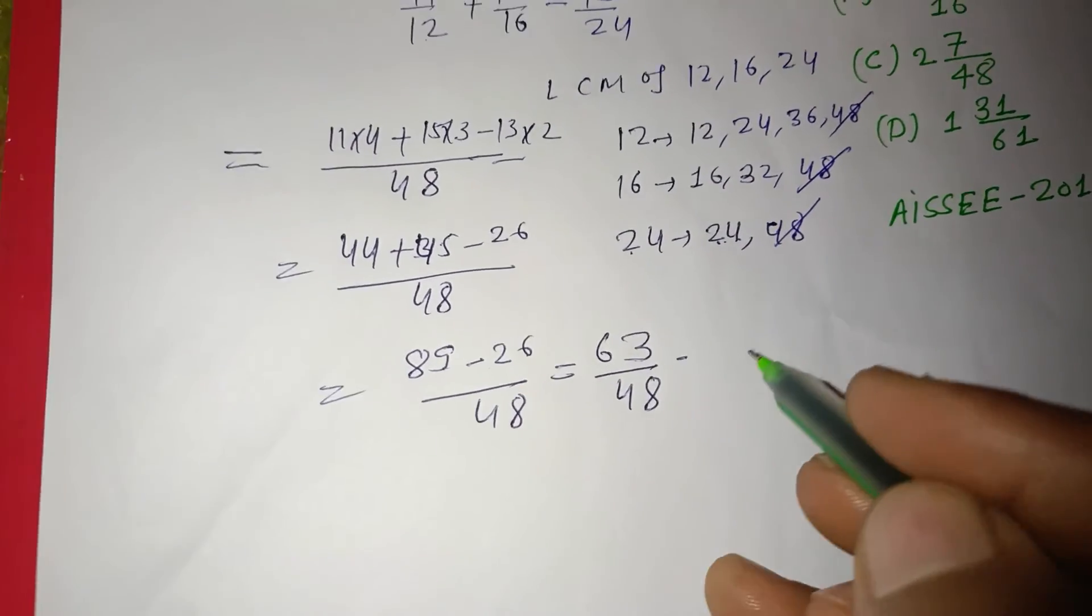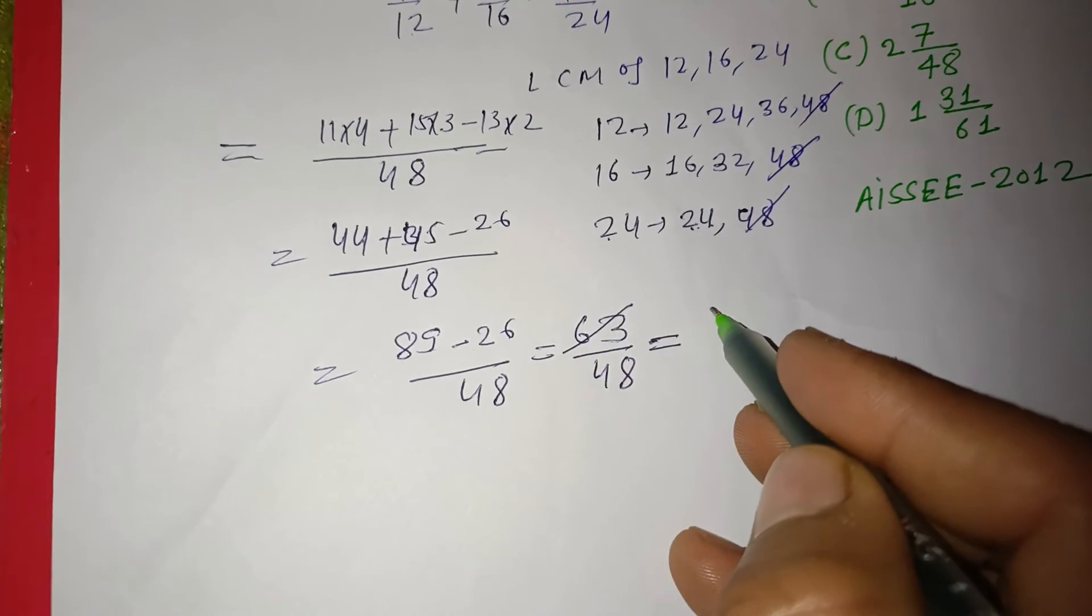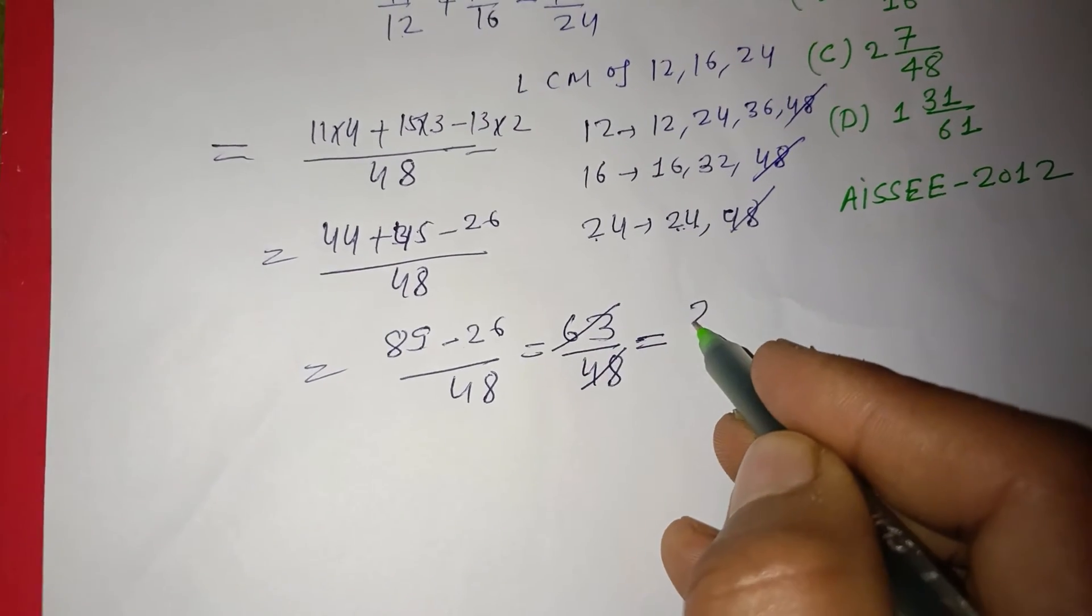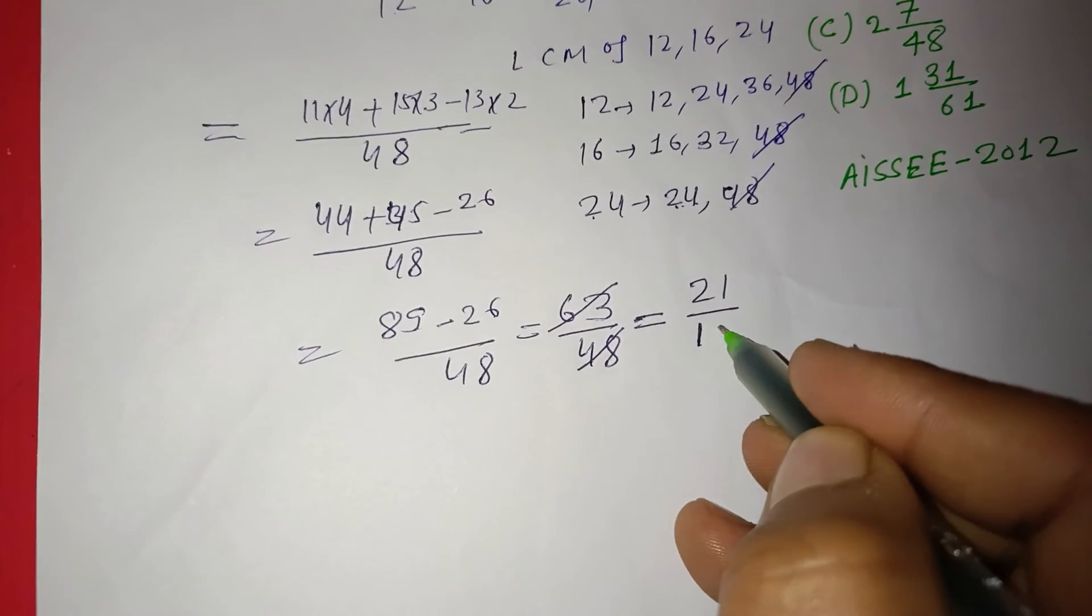63/48 can be simplified by dividing both by 3. 63 divided by 3 is 21, and 48 divided by 3 is 16, giving us 21/16.